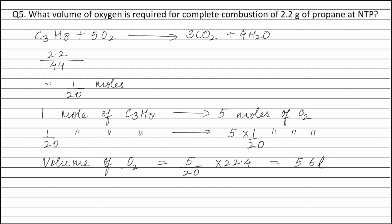Therefore, the volume of oxygen required for complete combustion of 2.2 grams of propane is 5.6 liters.